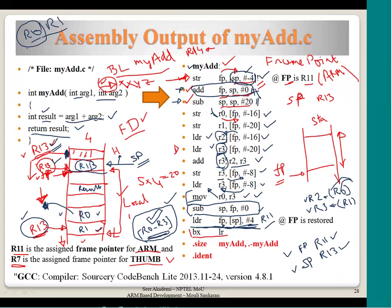R0 is loaded with the result, SP and FP are restored. R14 was not disturbed anywhere in this function — it was not modified or overwritten by any instruction. So R14 still holds the return address — the address of the instruction after BL myadd. The BX LR instruction will take the program back to the calling routine, to the next instruction after where this function was called.